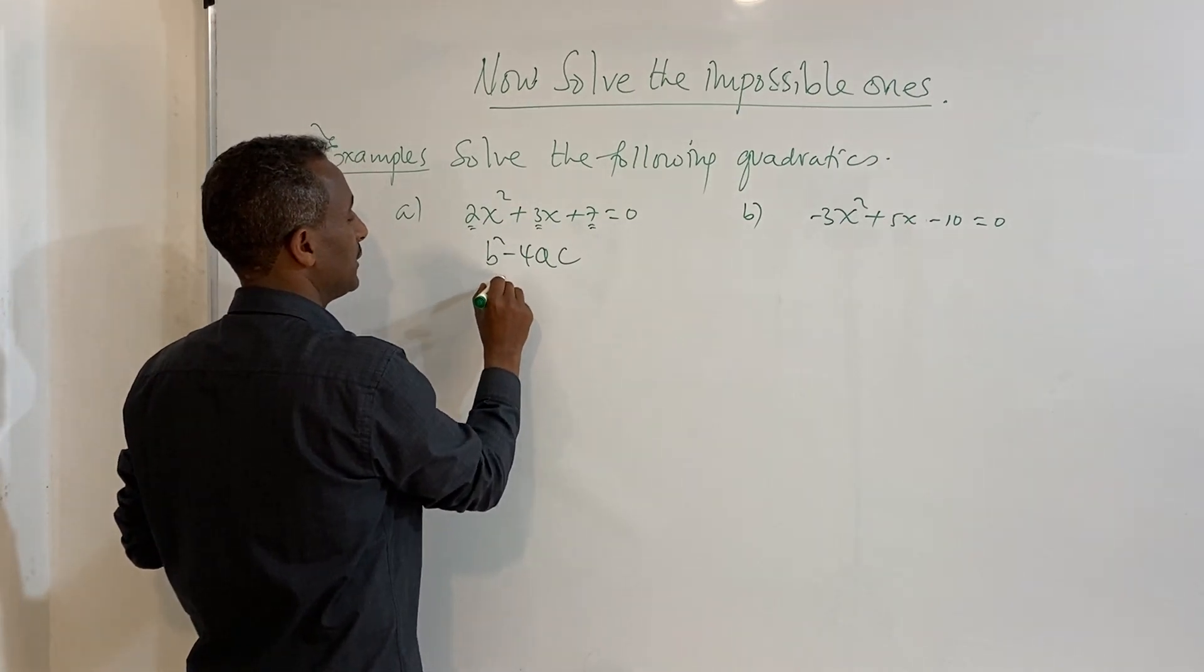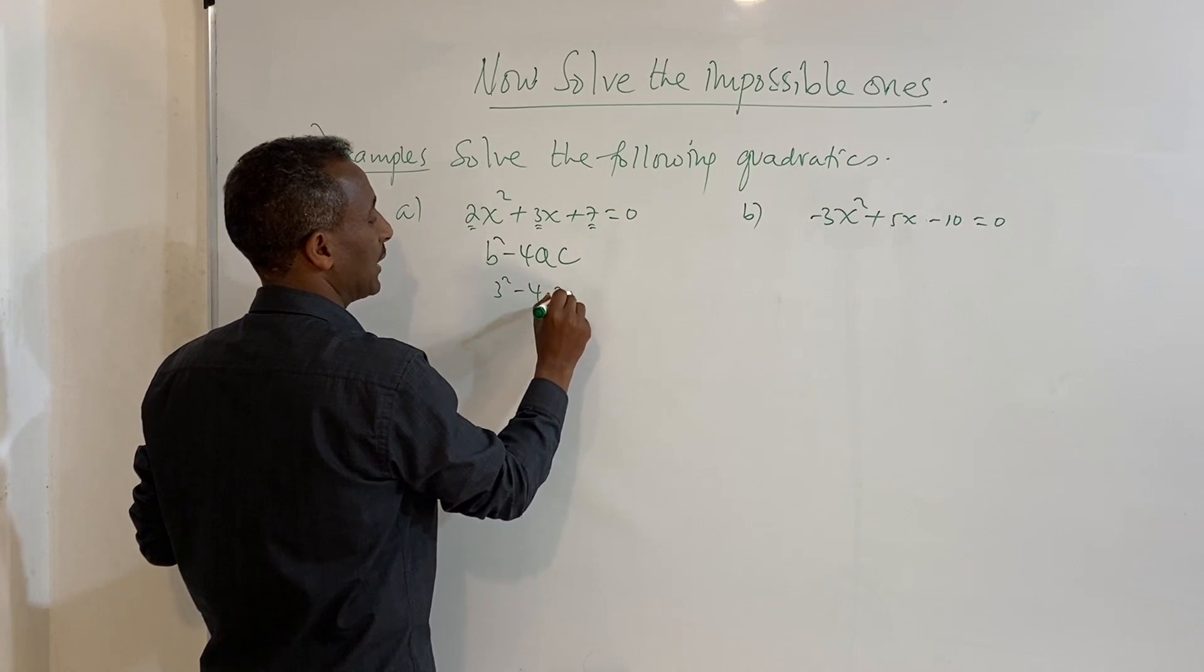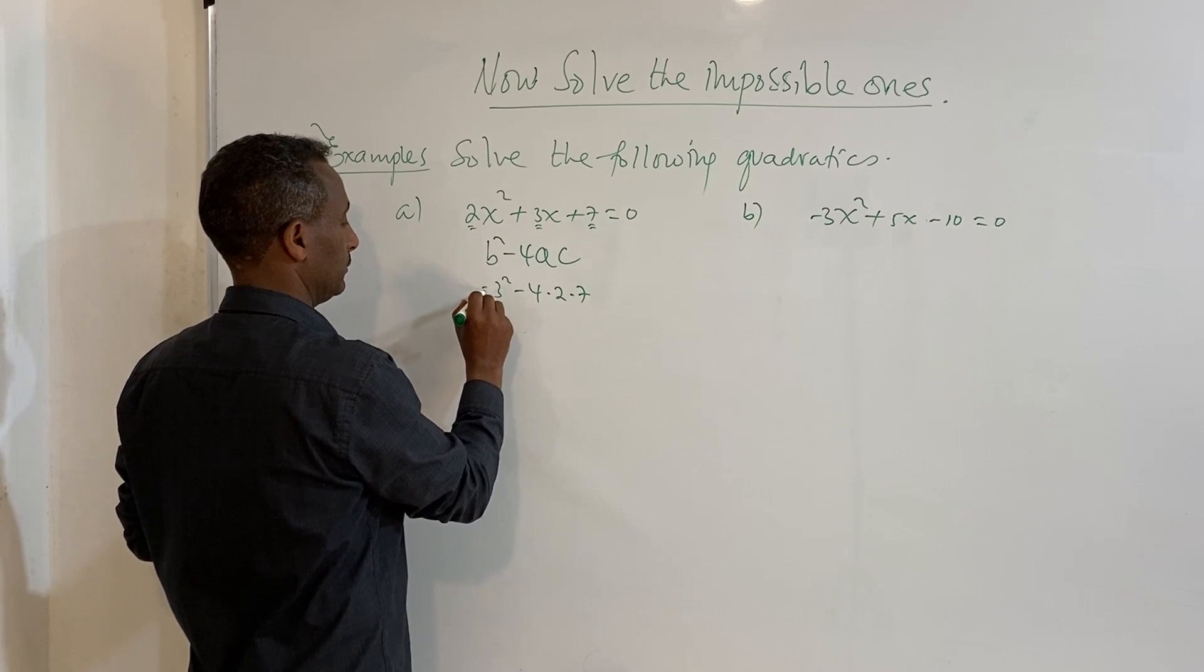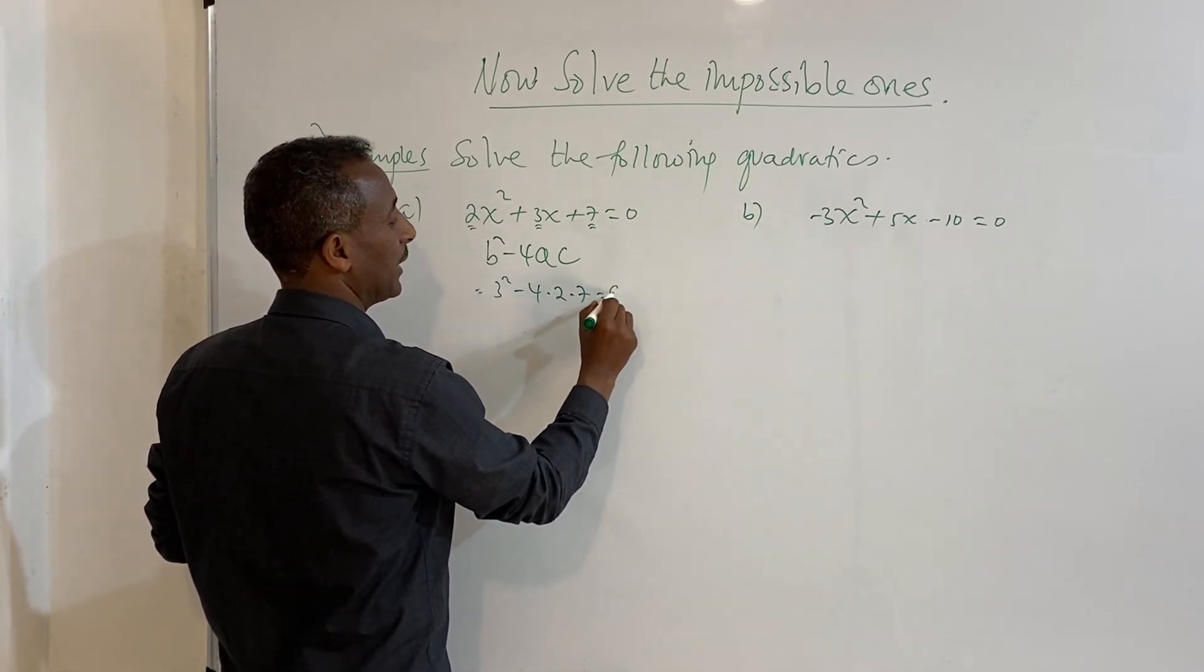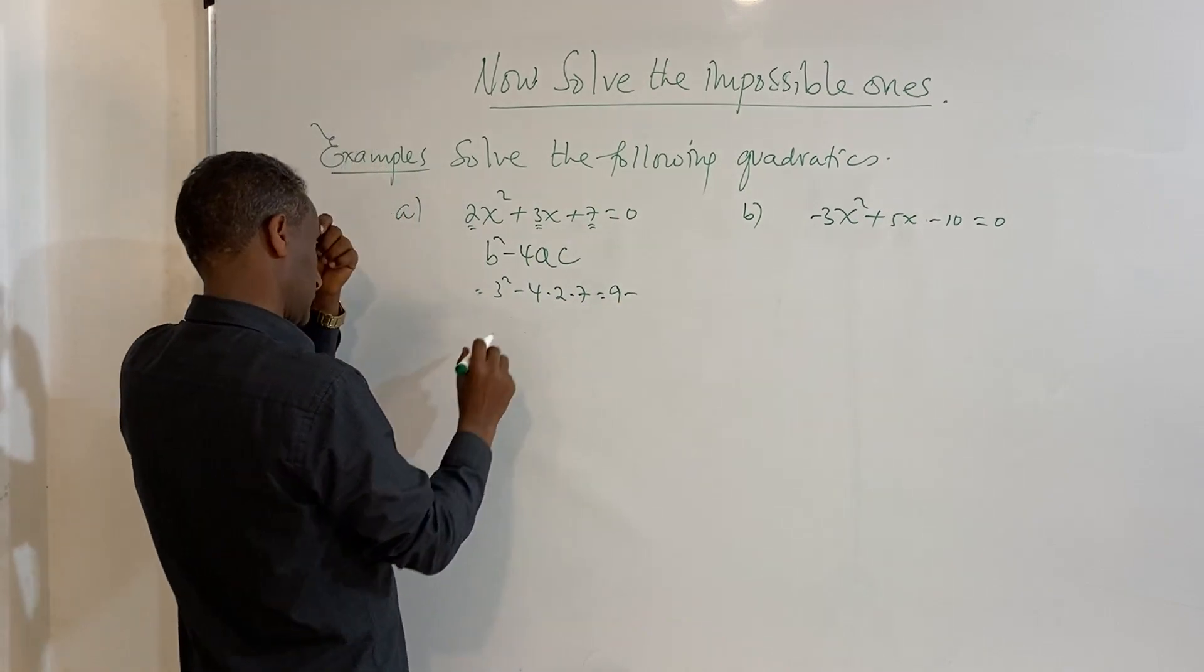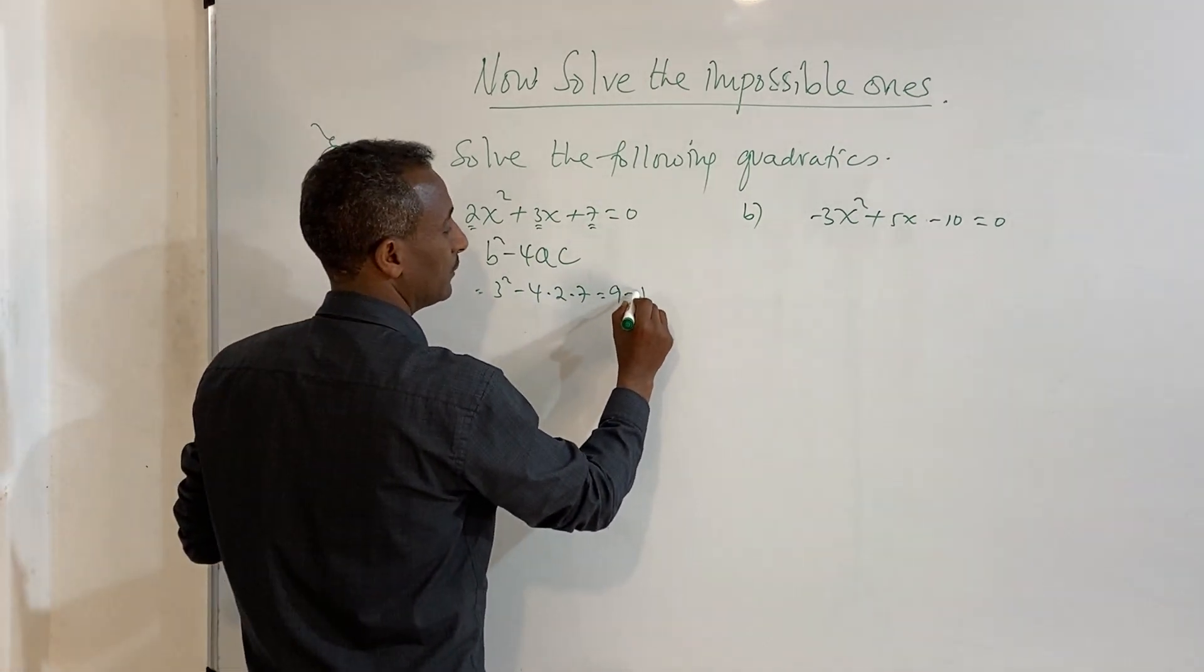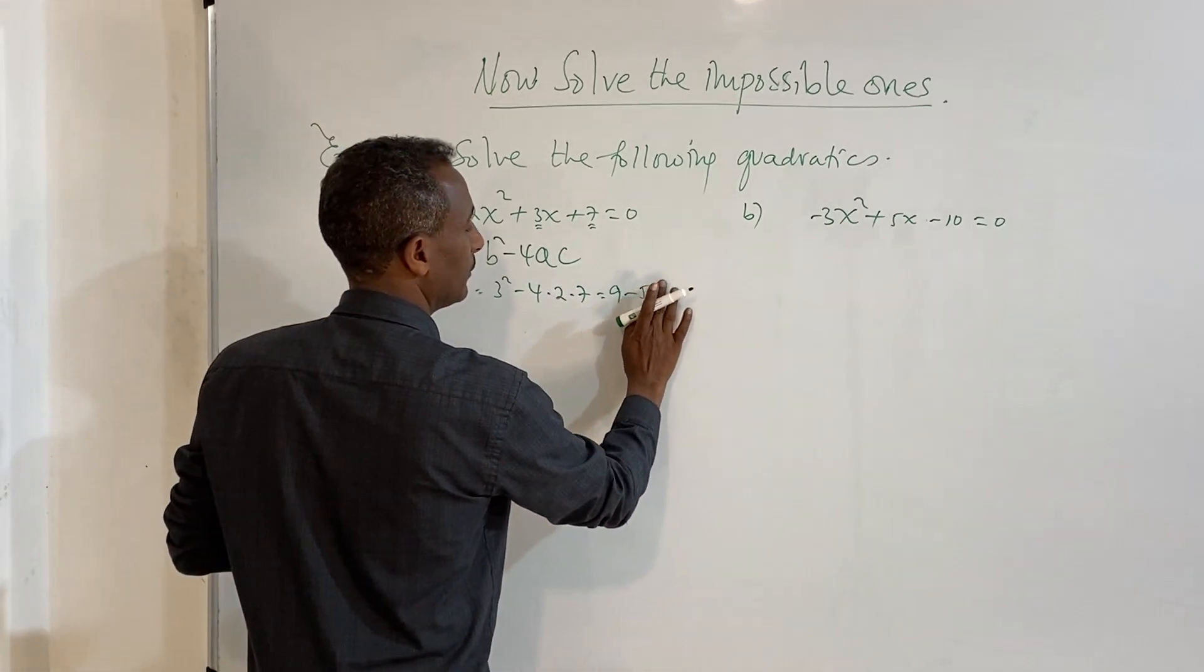So b squared is 3 squared minus 4 times a is 2 times 7. Which is equal to 9 minus, this one is 8 times 7 is 56.